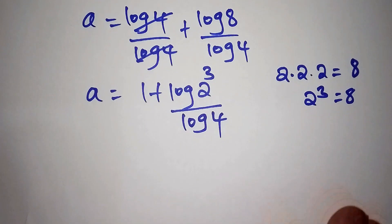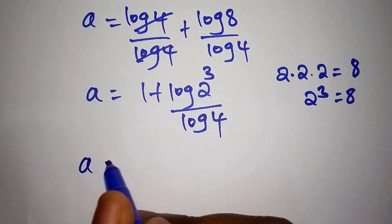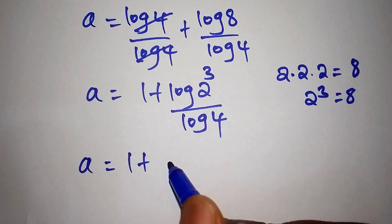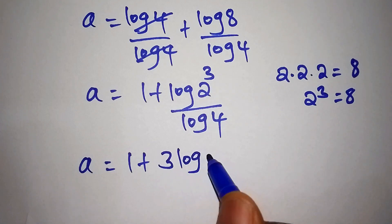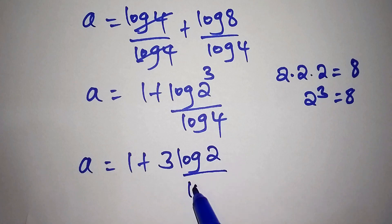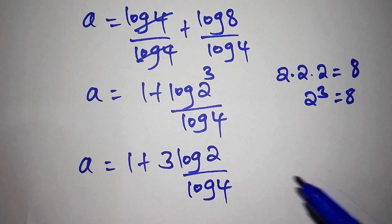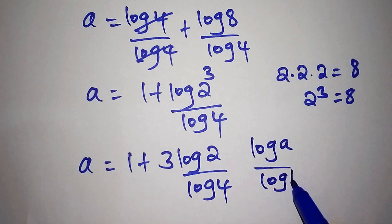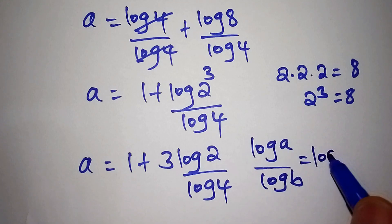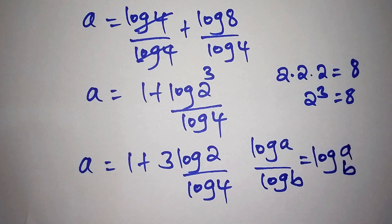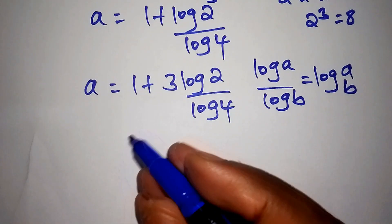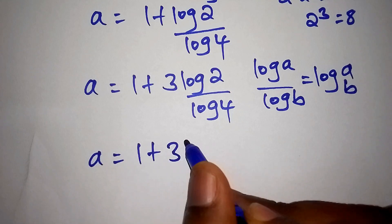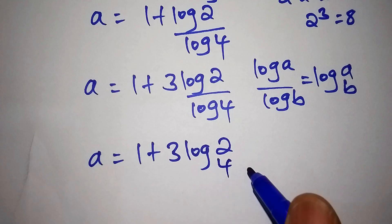From here, the value for a is equals to 1 plus, and the log of 2 to the power of 3 can be written as 3 times the log of 2, all over the log of 4. Assuming we have the log of a all over the log of b, this can be written as the log of a to the base of b. So our final answer shall be a equals 1 plus 3 times the log of 2 to the base of 4.